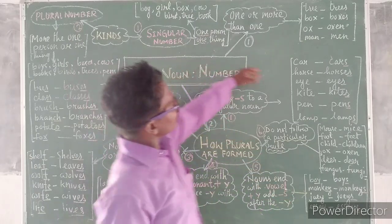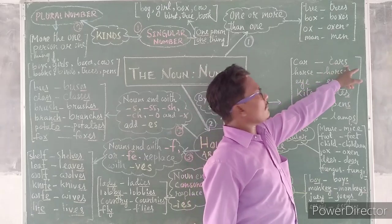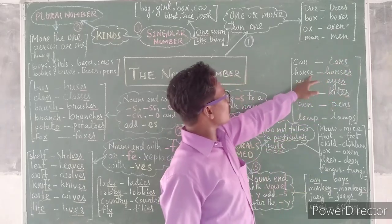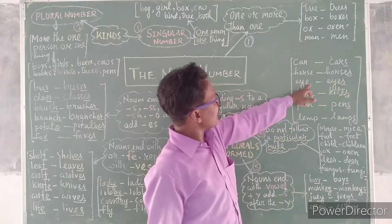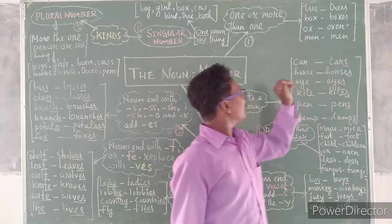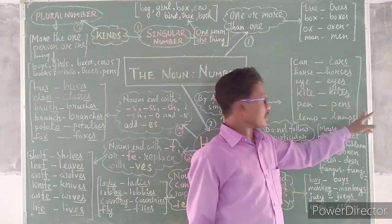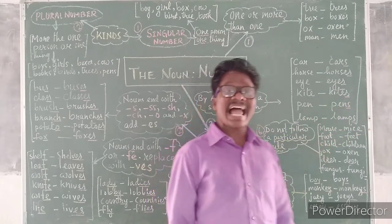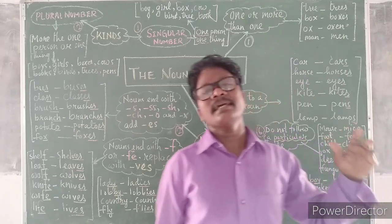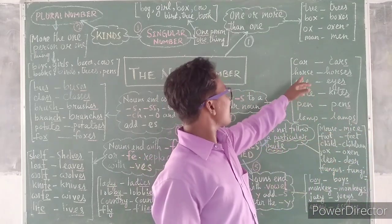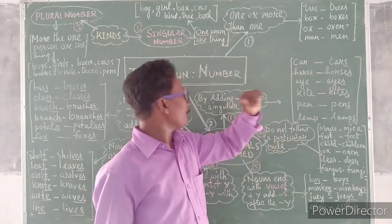The first way: by adding S to a singular number or a singular noun. It is very simple — we just add S to a singular noun. Examples: car — cars, horse — horses, eye — eyes, pen — pens, lion — lions. We have just added S to the singular noun and formed the plural. This is the first way of forming a plural number.